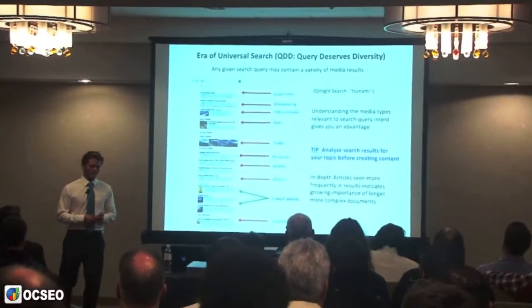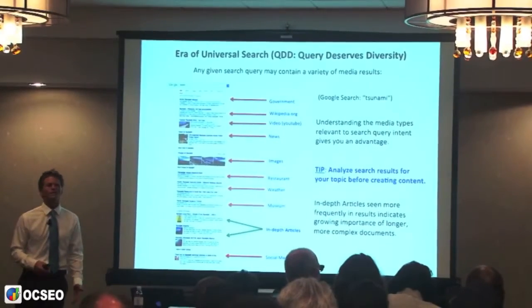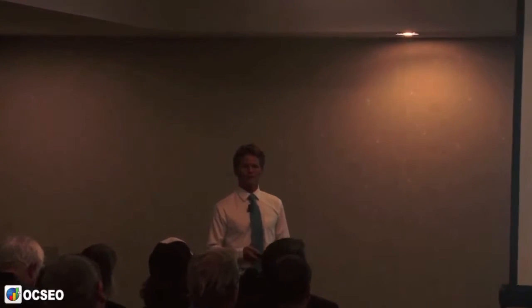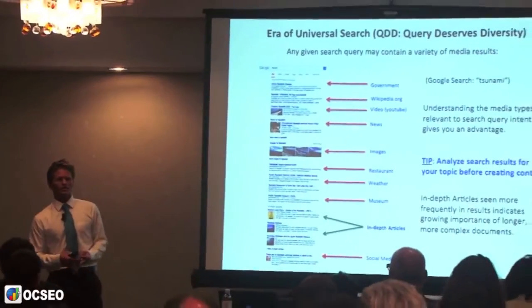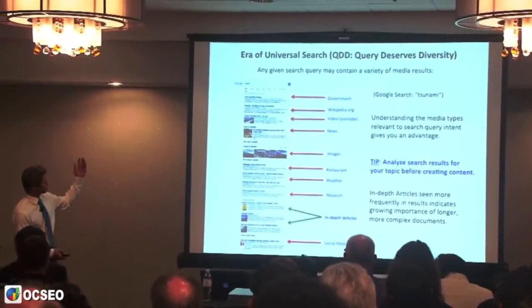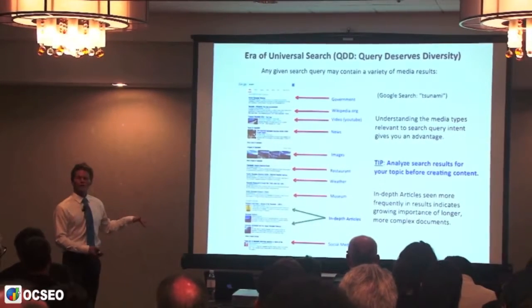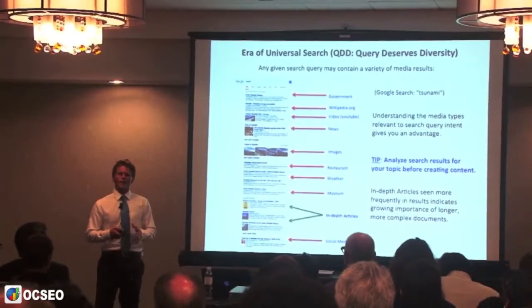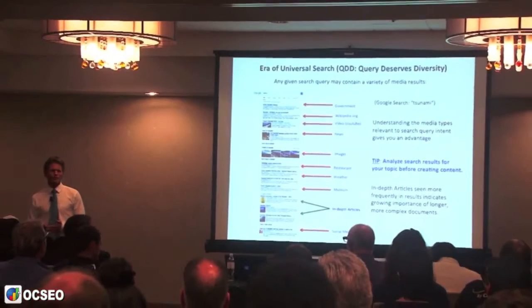Universal search basically means they're using their algorithm to search for dozens of different types of media for any given search query. If you were to search for tsunami, for example, you're going to see a government listing, a Wikipedia result, a YouTube video, images, news, a social media listing, a restaurant, a weather station, and in-depth articles. Almost everything on that page is a completely different type of media.